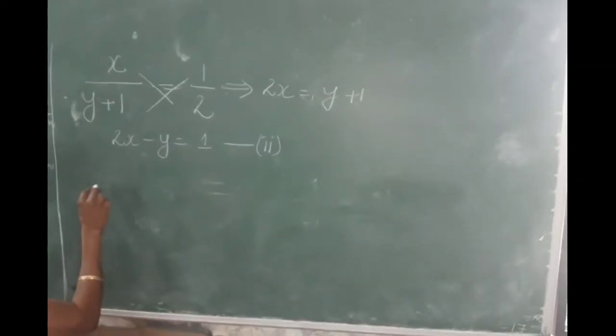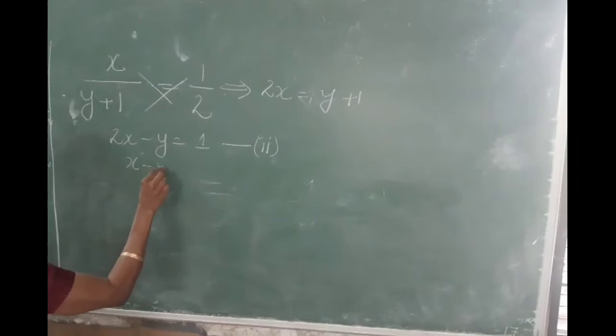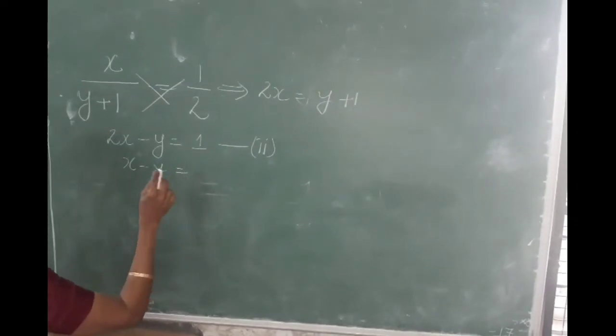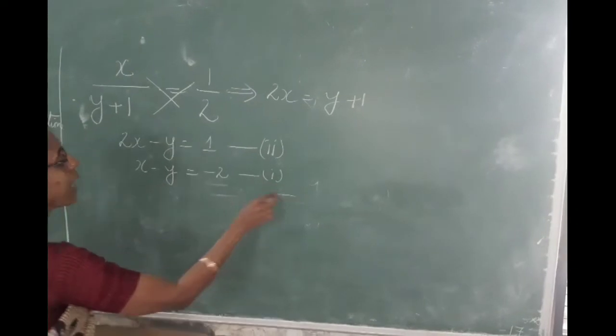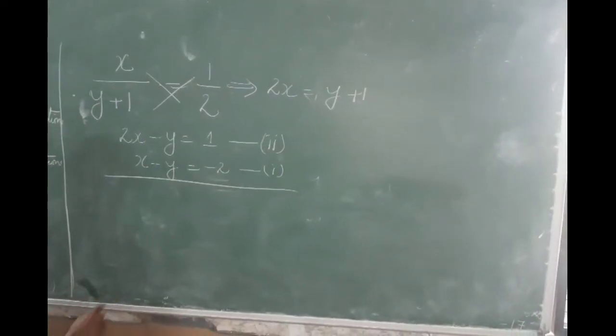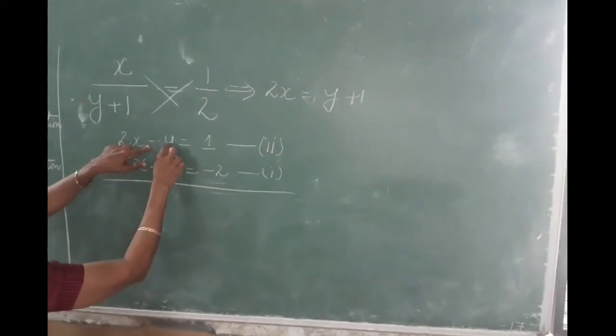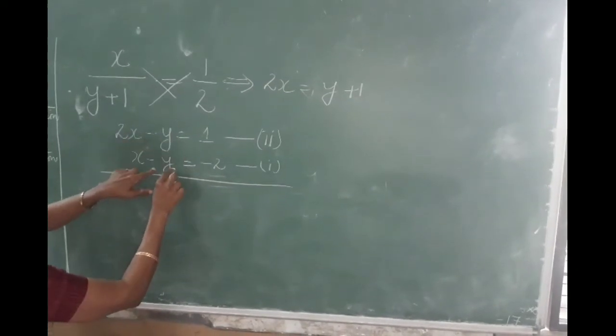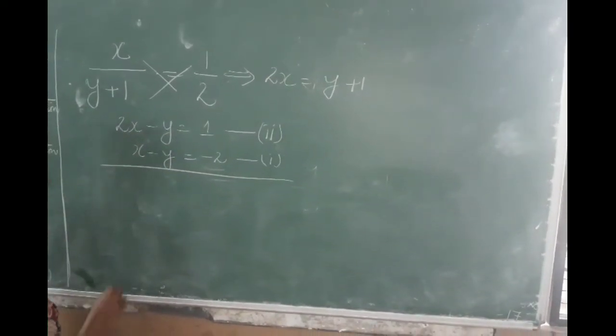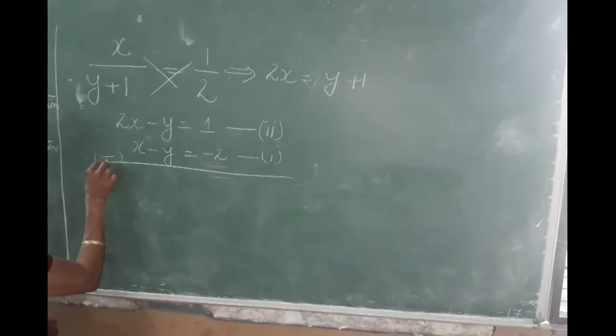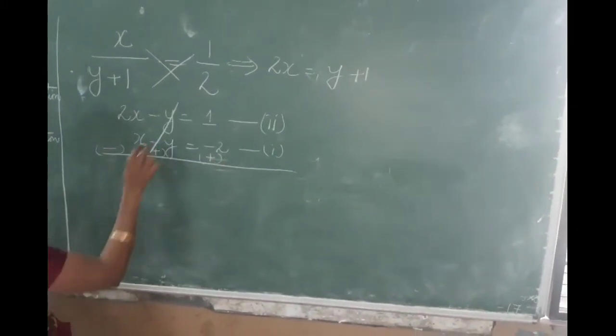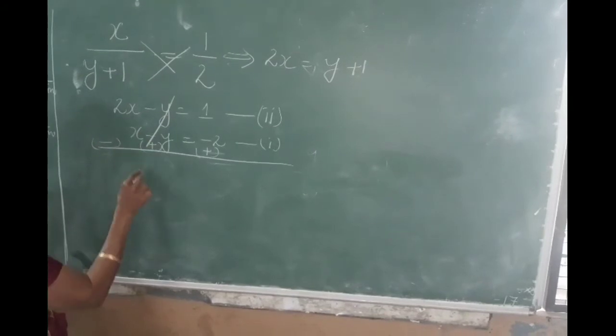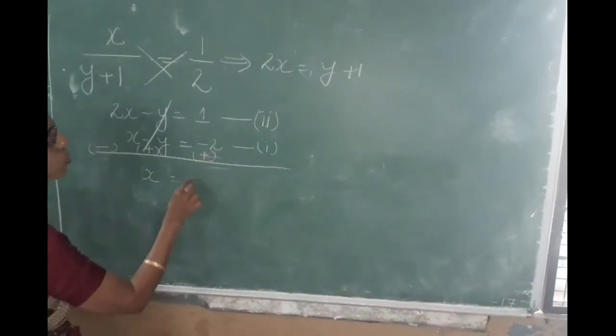So normally how do you solve? Whatever method you feel it easy, you can substitute and solve it using any method. So here I have got minus y coefficient, minus y. So I can use that elimination method by subtracting one over the other. So on subtraction, what will I get? y and y getting cancelled, 2x minus x is x, 1 plus 2 is 3.